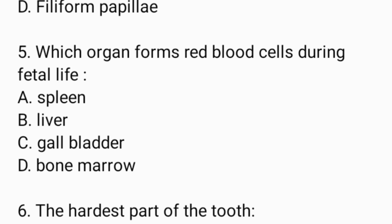Next question: Which organ forms red blood cells during fetal life? Option A: spleen. Option B: liver. Option C: gallbladder. Option D: bone marrow. And the answer is liver.